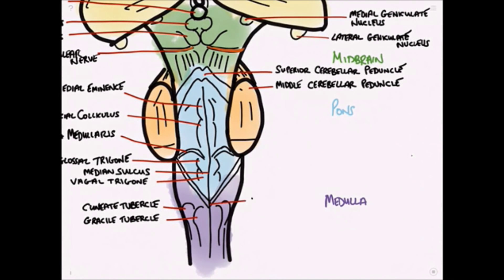We can label this as the obex and we should go back up here and label the inferior cerebellar peduncle.